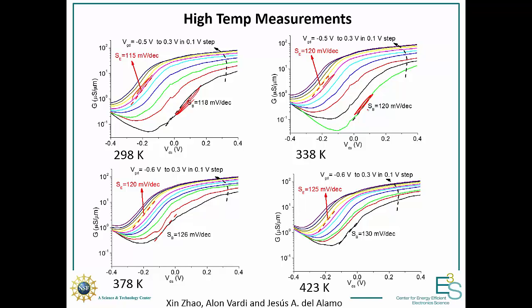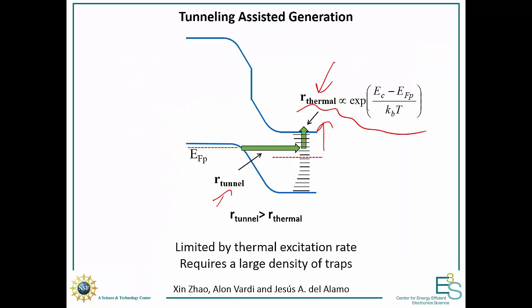Unfortunately, what this is really telling us is that our devices aren't very good. For this whole mechanism to operate, we needed a huge density of interface traps. Really what this comes down to is: until we get rid of these traps, we're never going to see a sharp turn-on. Devices that show sharp turn-ons at low temperatures can't be trusted, because at low temperature that steepness is due to a thermal process which will never be better than a MOSFET.